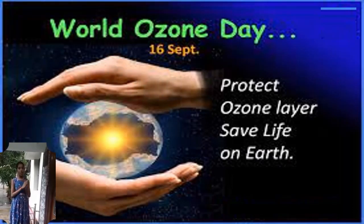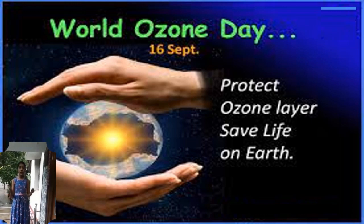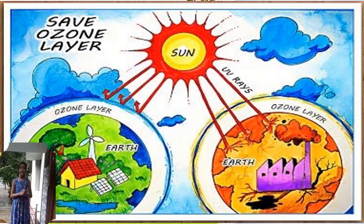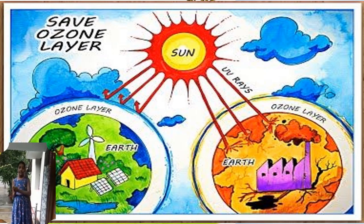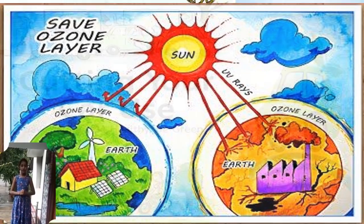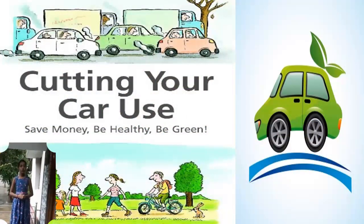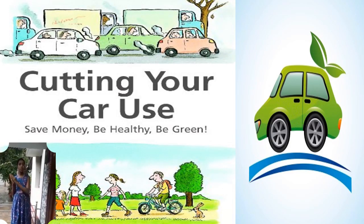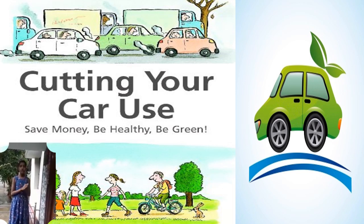To protect the ozone layer, here are some measures you can follow in your daily life. The first measure is to avoid the consumption of gases dangerous to the ozone layer — reduce the release of chemical gases produced by factories and mills, and keep our surroundings clean. The second measure is to minimize the use of vehicles, as they produce harmful carbon gases. Instead, use bicycles or walk for short distances.